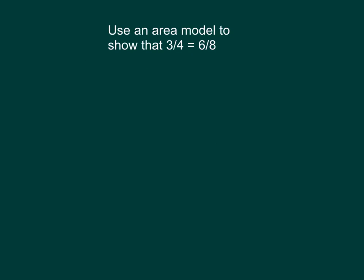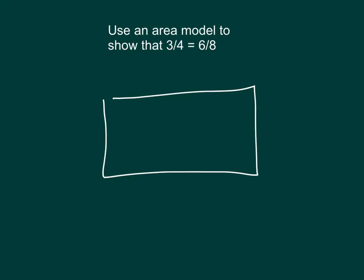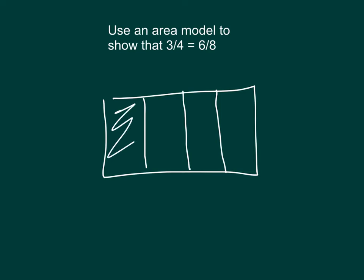Use an area model to show that 3 fourths equals 6 eighths. We'll look at 3 fourths first. We'll draw an area model. The whole thing represents 1, so we'll divide it into 4 parts. Because it's 3 fourths, so now we have fourths.